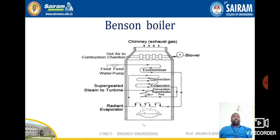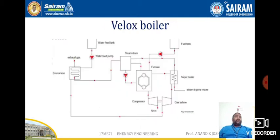Let us move on to the Velox boiler, which is a high pressure boiler. This boiler consists of a compressor, gas turbine, economizer, water pump, steam drum, and fuel tank. A superheater is also provided in this arrangement.